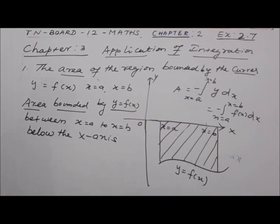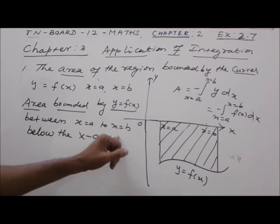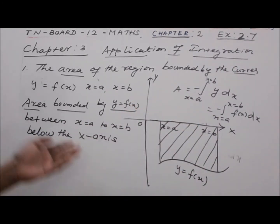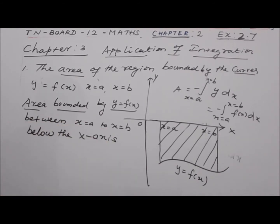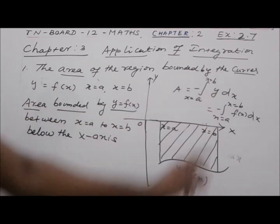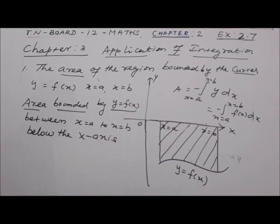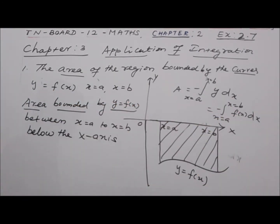So we have introduced two formulas. One is the area bounded by the curve above the x-axis, and the second is the area bounded by the curve below the x-axis, for which Area = -∫(x=a to x=b) y dx, or -∫(a to b) f(x) dx. We have two more formulas, similar to these, when the curve covers area with the y-axis.